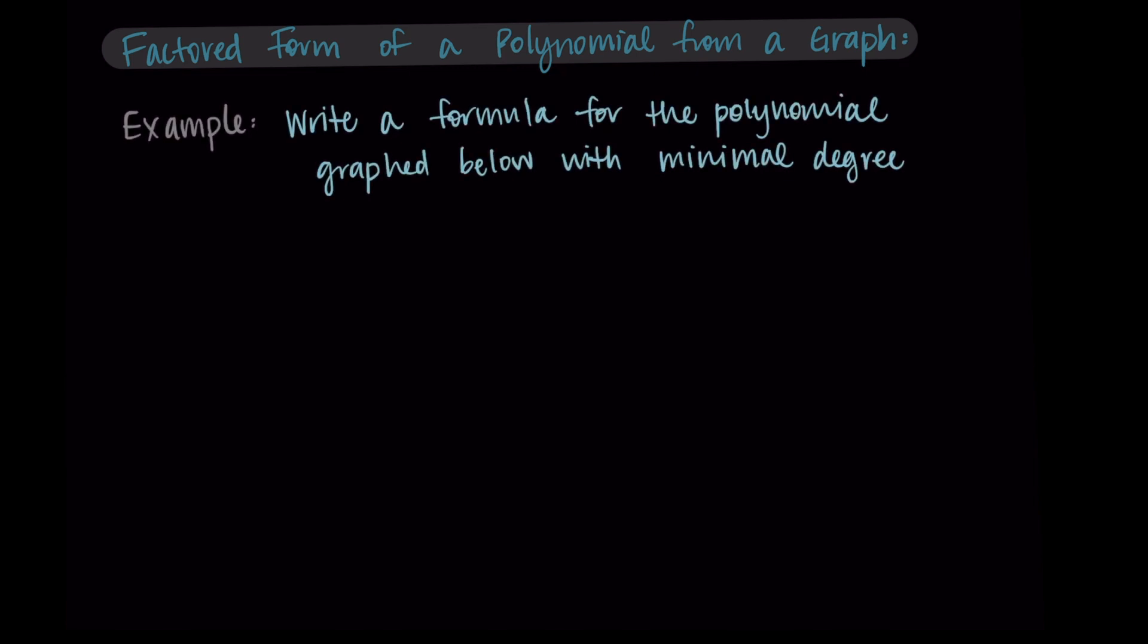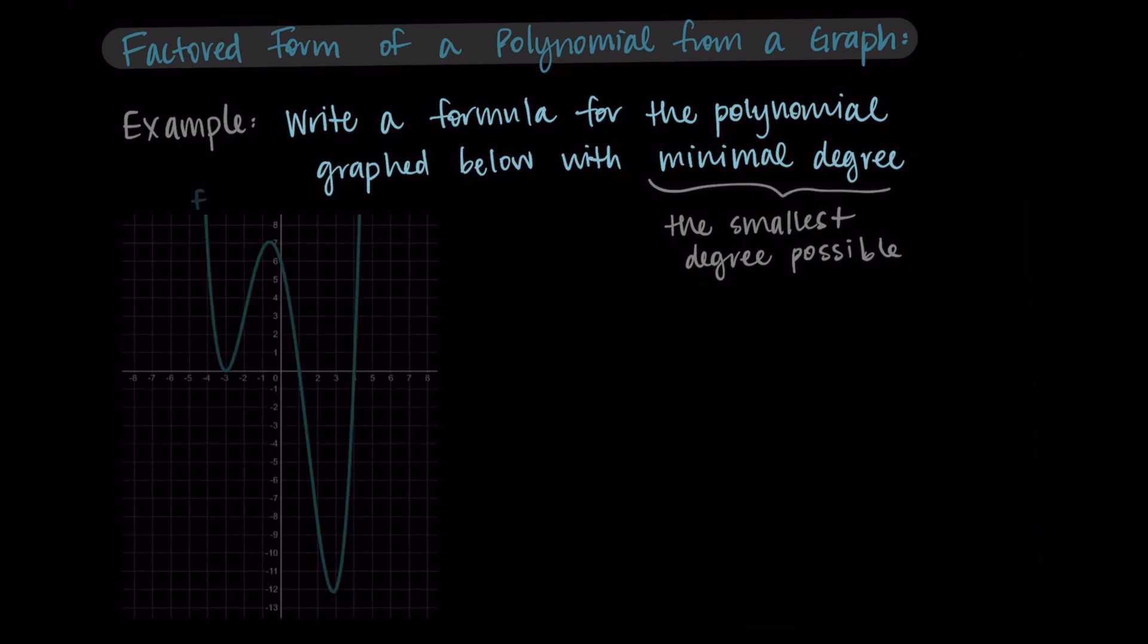Let's write a formula for the polynomial graphed below that has minimal degree. This minimal degree just means the smallest degree possible. We can't for sure tell the degree of a polynomial just by looking at its graph, but we're going to make one with the smallest degree that makes sense for this graph. So just don't add any extra degrees where they might not need to be.